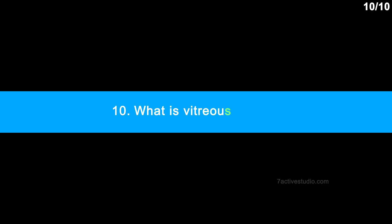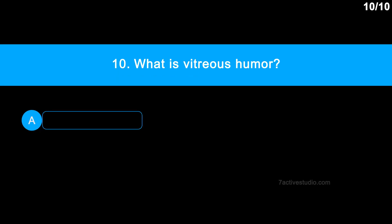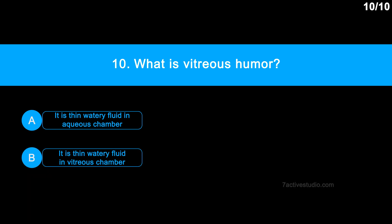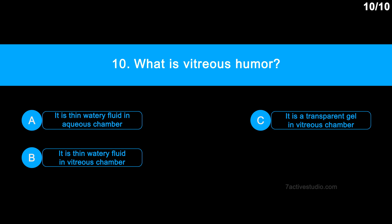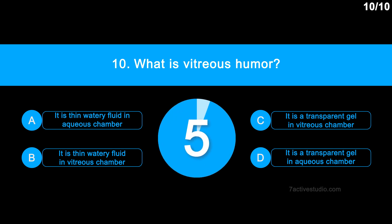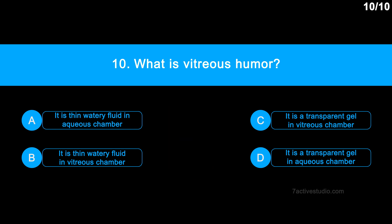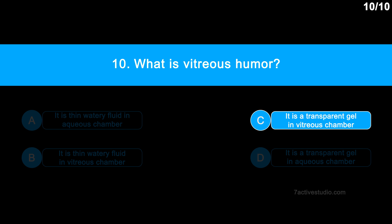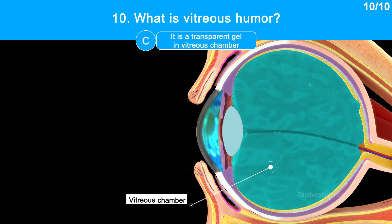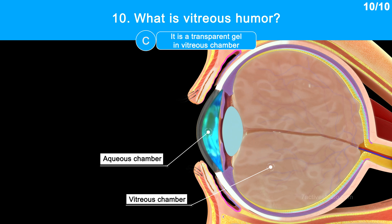Question number 10: What is vitreous humour? Option A: it is thin watery fluid in aqueous chamber. Option B: it is thin watery fluid in vitreous chamber. Option C: it is a transparent gel in vitreous chamber. Option D: it is a transparent gel in aqueous chamber. The correct answer is option C, it is a transparent gel in vitreous chamber. In the vitreous chamber, the humour is a clear gel, but in the aqueous chamber, the humour is a thin watery fluid.